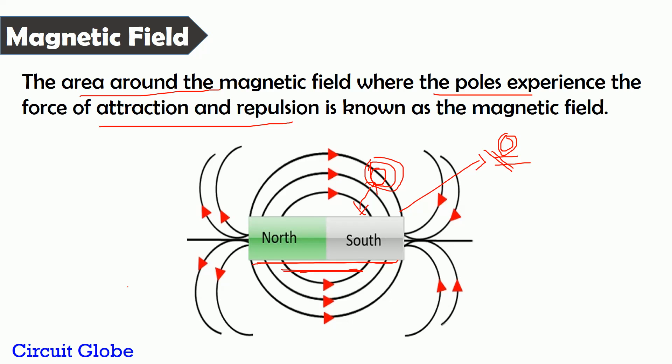The presence of the magnetic field can easily be detected by a simple experiment. Suppose this is a bar magnet and we place some iron filings near it. Because of the magnetism, these filings align themselves in the direction from the north to south poles of the magnet. That alignment shows that some kind of force is present near the bar magnet, which is due to the magnetic field.